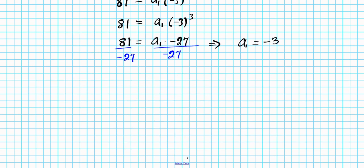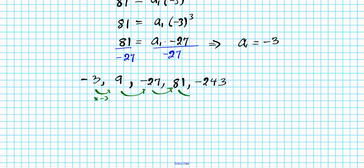Now with the first term, we can generate the remaining terms by starting with negative 3 and repeatedly multiplying by the common ratio of negative 3. Negative 3 times negative 3 gives 9; times negative 3 gives negative 27; times negative 3 gives 81; times negative 3 gives negative 243. So the first five terms are: negative 3, 9, negative 27, 81, negative 243.